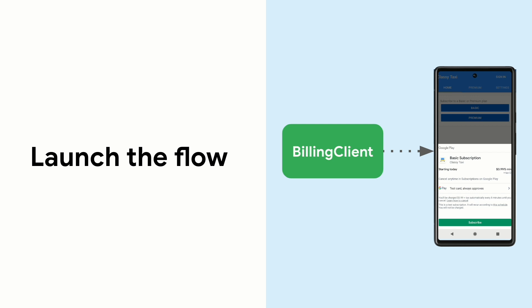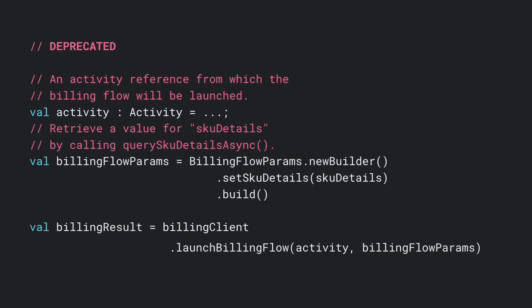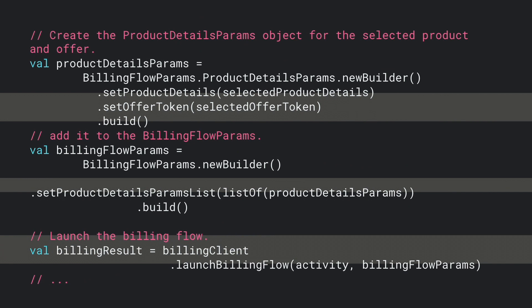Once the user has selected which offer they want to buy, it's time to launch the billing flow. The billingFlowParams.setSkuDetails method has been deprecated. For each product to be bought, create a ProductDetailsParams object containing the ProductDetails object and the offer token indicating the exact offer. That list of ProductDetailsParams goes into BillingFlowParams, used with the method launchBillingFlow. Just as before, you'll also specify a reference to an activity from which the billing flow will be launched.